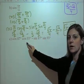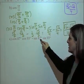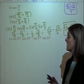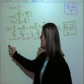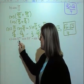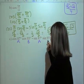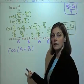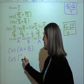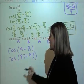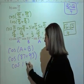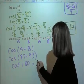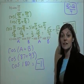Now let's look at part C: cosine of 87 times cosine of 93 minus sine of 87 times sine of 93. That looks like our sum formula. If A = 87 and B = 93, then that's cosine of A plus B, which is cosine of 87 plus 93, which is cosine of 180. And that equals negative 1.